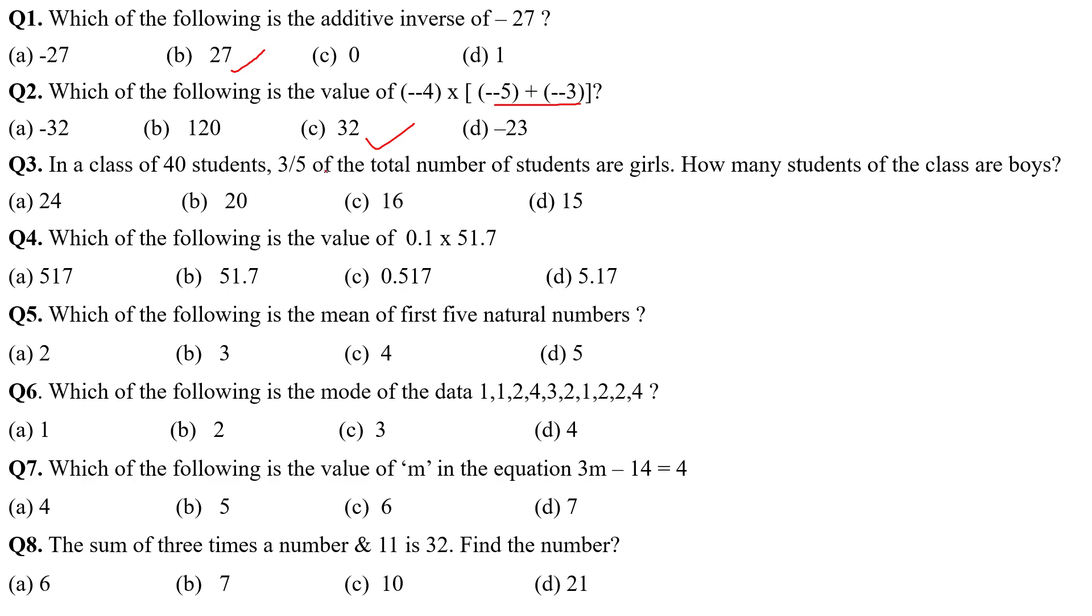40 students, 3 by 5 of total number of students are girls. How many girls are there? 3 by 5, so you have to do 3 by 5 into 40. So, it will be 5, 8, 40. When you cancel out, it is 5, 8, 40. 3, 24 are girls, then 16 will be boys. Option C is the correct answer.